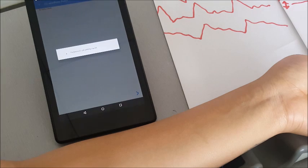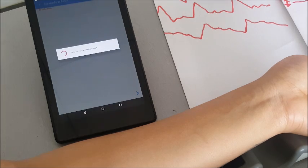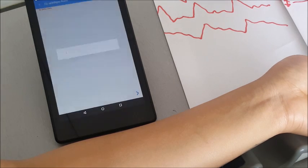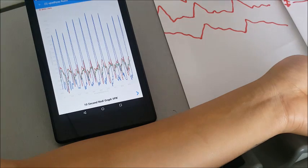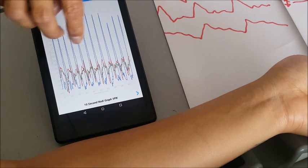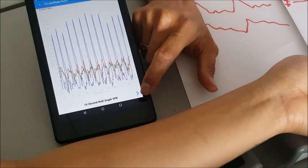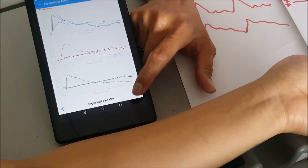Once the calculations are done you will get the report card. Observe that vata, pitta, and kapha—all nadis have come. Now you already know how to read the report card and how to look into it.